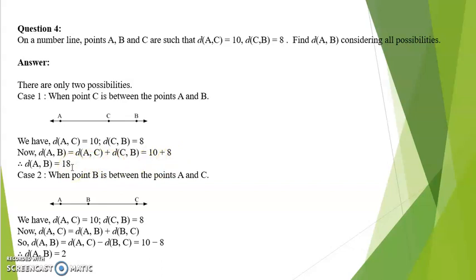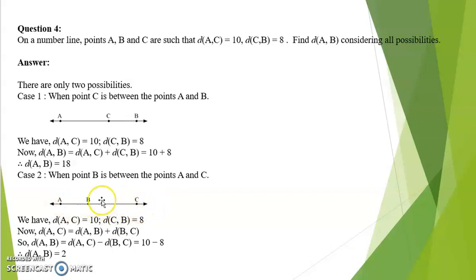Case 2, point B lies in between A and C. Distance AC is equal to 10 and distance CB is equal to 8. Therefore AB would be AC minus CB, that is 10 minus 8. The answer is 2.